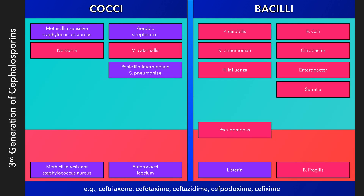Third-generation cephalosporins are broad-spectrum antibiotics that can treat a wide variety of conditions, such as respiratory tract infections, urinary tract infections, Lyme disease, meningitis, and gonorrhea. Although they are less effective against staphylococci, they provide better coverage against pneumococci, Neisseria species, Haemophilus influenzae, and the Enterobacteriaceae.